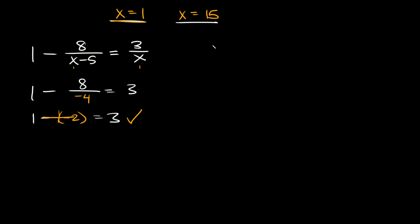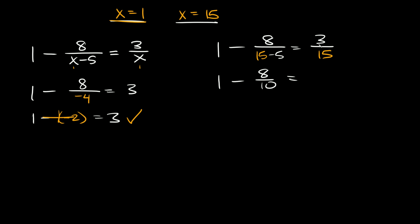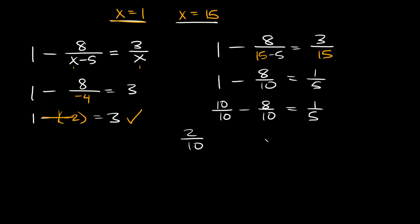Now let's check x equals 15. We get 1 minus 8 over 15 minus 5 equals 3 over 15. So 1 minus 8 over 10 equals 1 over 5. Writing 1 as 10 over 10: 10 over 10 minus 8 over 10 equals 2 over 10, which reduces to 1 over 5. So 1 over 5 equals 1 over 5 — x equals 15 is also a true solution. No extraneous solutions here.